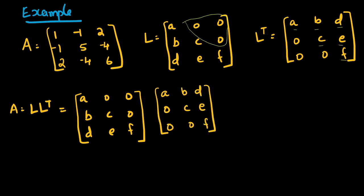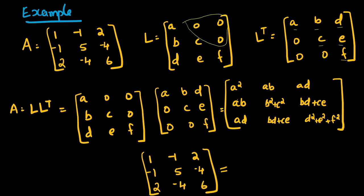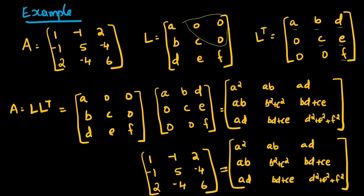According to Cholesky decomposition, A equals L times L-transpose. Computing the product gives: [A², AB, AD; AB, B²+C², BD+CE; AD, BD+CE, D²+E²+F²]. This result is a symmetric matrix, which is consistent since A is symmetric.